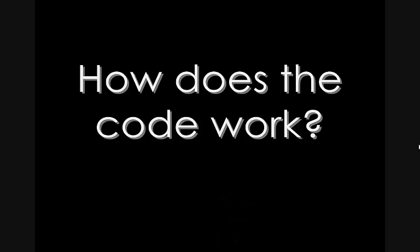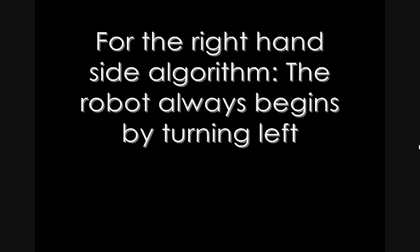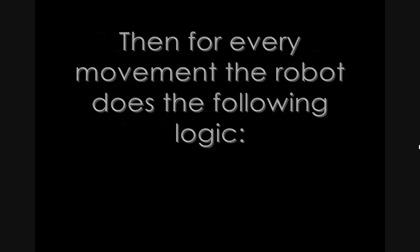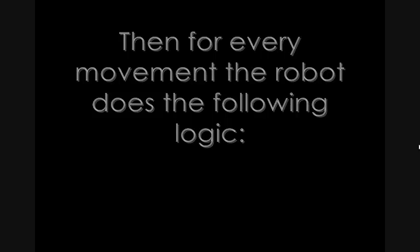I will briefly go over how the code works for the pledge algorithm. For the right hand side algorithm, the robot always begins by turning left. For every movement, the robot will check the front, left and right obstacle sensors and perform the following logic.